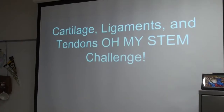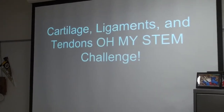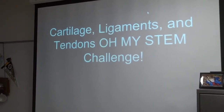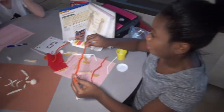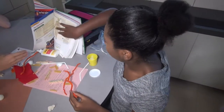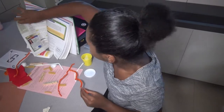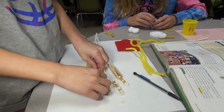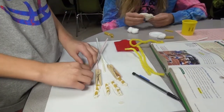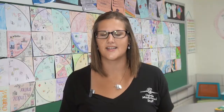In seventh grade right now we're learning about human body systems. You do need to memorize what bone is where — what your thigh bone is called, what your arm bones are called. But then we're going in and applying it and saying: I know all these bones, I know all these ligaments, I know all these tendons — how do they work together?